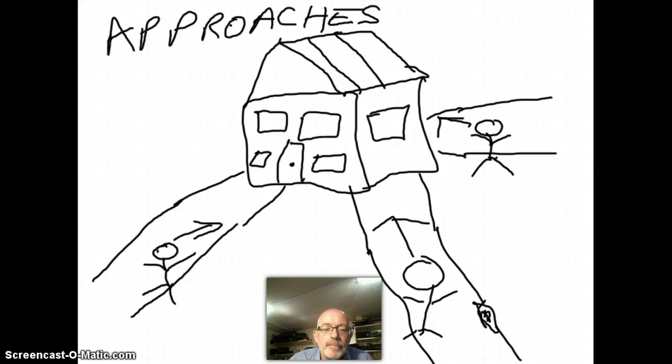Here we have a house with three different paths going toward it - three different ways of approaching the house. If you think about these three people as they look at the house, this person here as they approach it from this direction will see something very different.